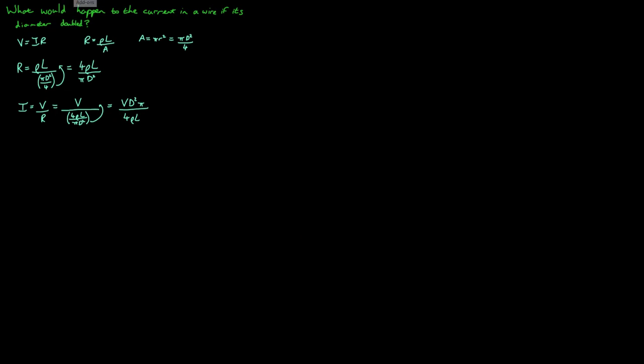Now let's think about what we actually know from this question. We know that the diameter of the wire is doubled, so d2, the diameter of wire 2, is going to be equal to 2 times d1. All of the other values we have here - voltage, resistivity, length, of course pi - are constants. They're not changing between the two wires. That will be important later.